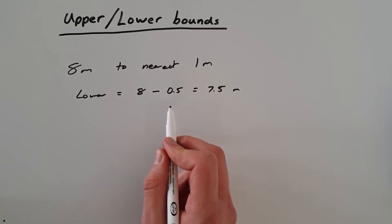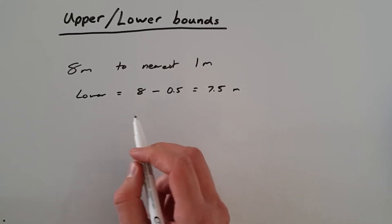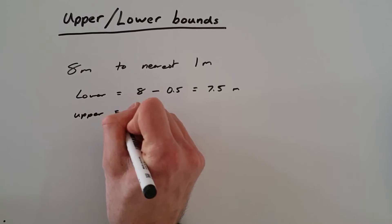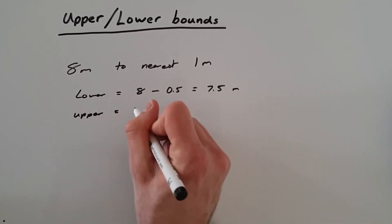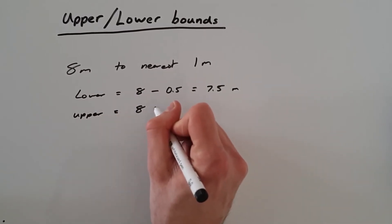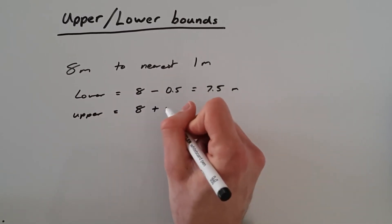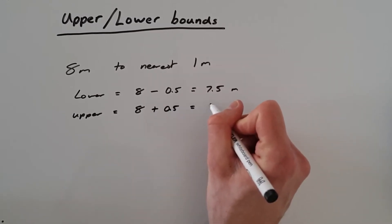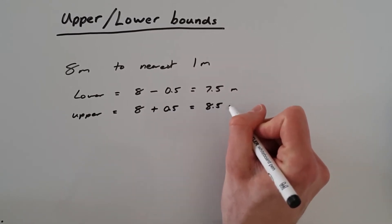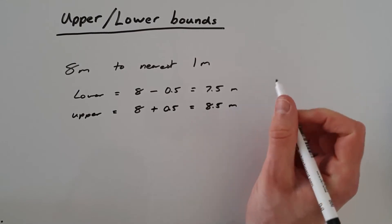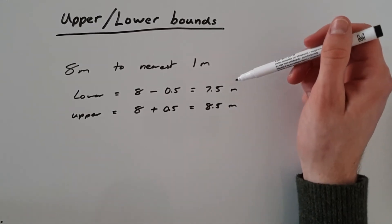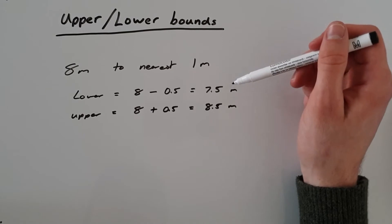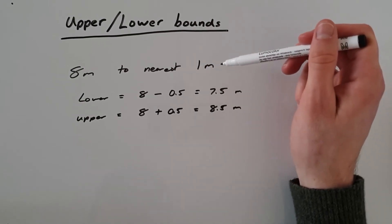We'll do the exact same thing for the upper bound. The upper is equal to eight plus 0.5, which gives us 8.5 meters. So that is the upper and lower bounds of eight to the nearest one meter.